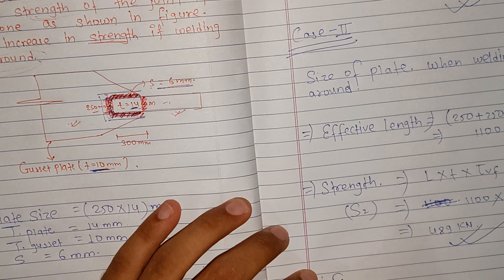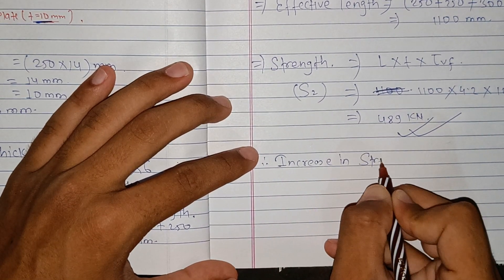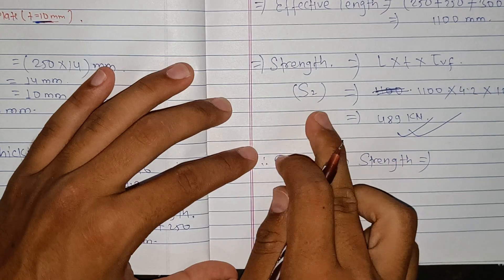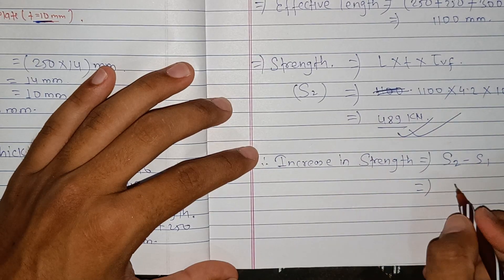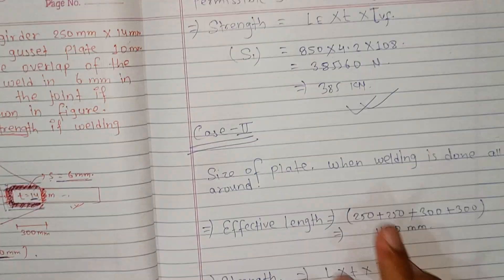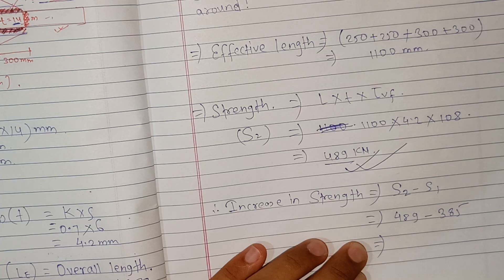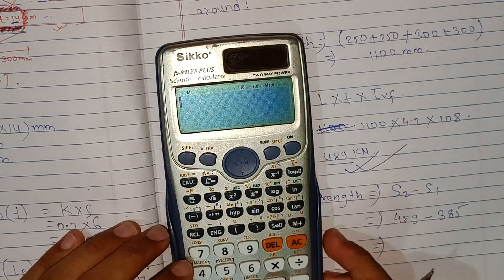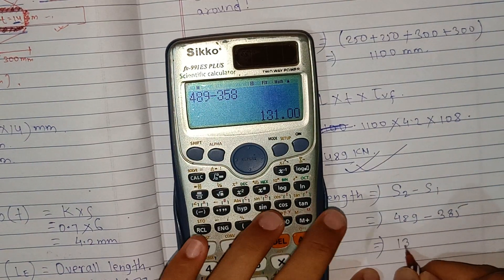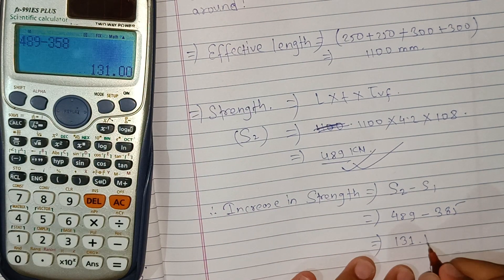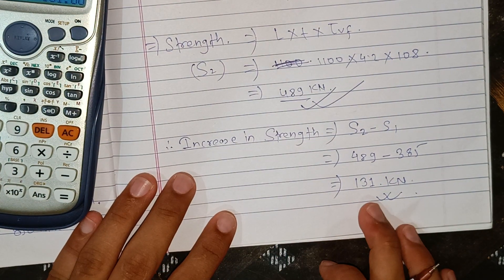Therefore, the increase in strength equals Strength 2 minus Strength 1: 489 minus 385 equals 131 kN. So the increase in strength is 131 kN.